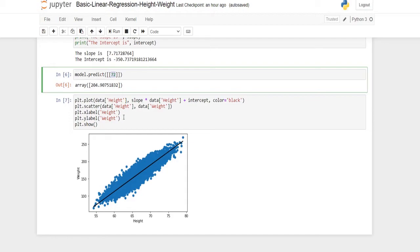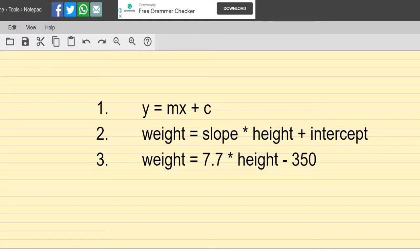Let's do some prediction. In the sixth block of code, we have done a prediction for a person with a height of 72. The output says that his weight will be around 204 to 205 pounds. If we substitute this 72 value in the third formula, we will get exactly what the output shows here.